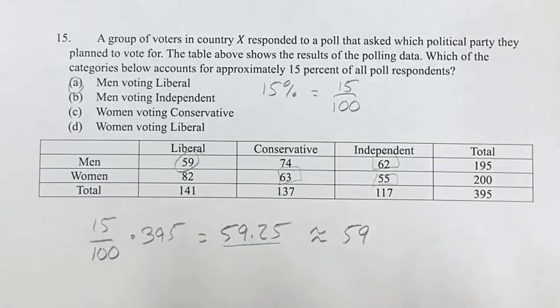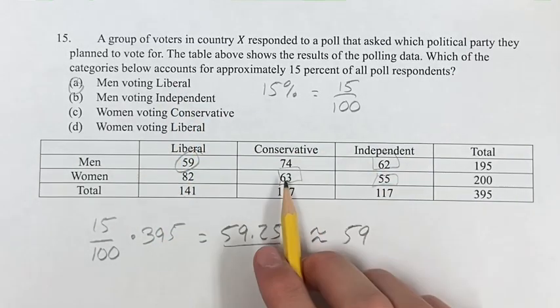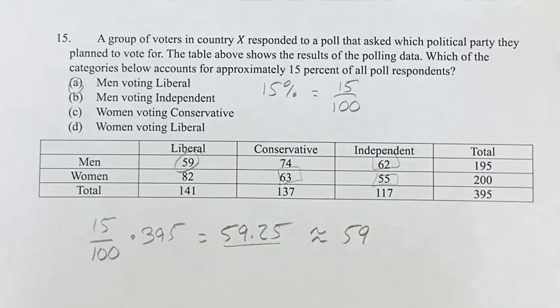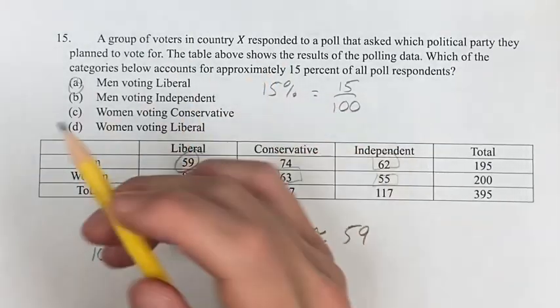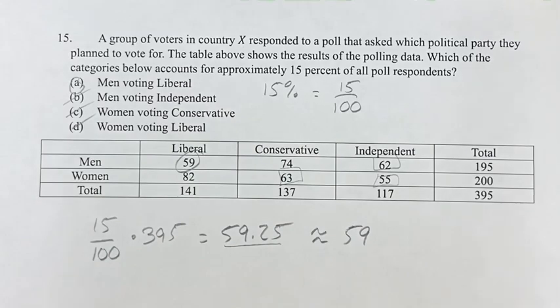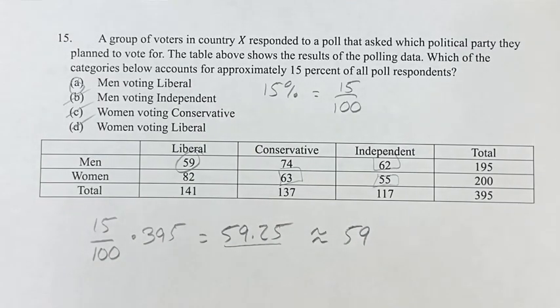So A has to be the answer because it is by far the closest to the actual 15% marker. If 59 wasn't one of the answer choices, you would then look at 63, 62, and 55 to see which is closest. But we don't even have to do that — our answer is A: men voting liberal account for approximately 15% of all poll respondents.